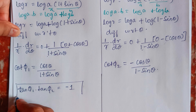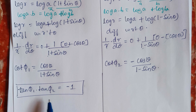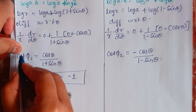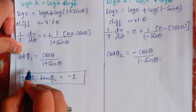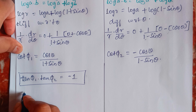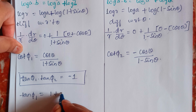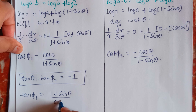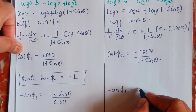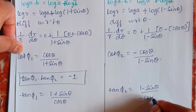Since cot is the reciprocal of tan, taking the reciprocal of cot φ₁ gives: tan φ₁ = (1 + sinθ)/cosθ. And taking the reciprocal of cot φ₂ gives: tan φ₂ = (1 − sinθ)/(−cosθ). These are the expressions we will substitute to check whether tan φ₁ · tan φ₂ equals −1.